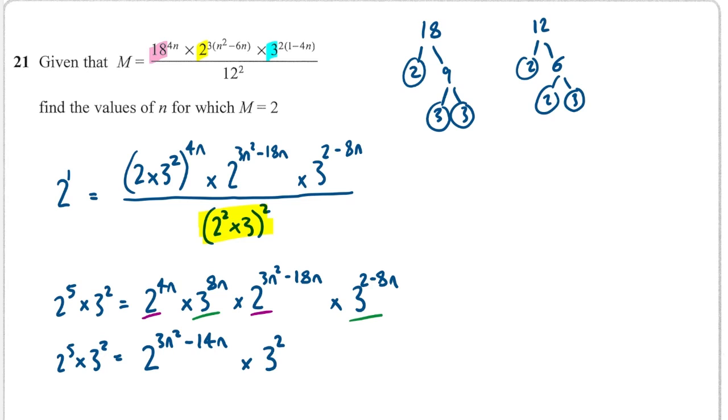Okay, great. Next thing I can do is I have 3 squared on both sides. So I can divide by 3 squared on both sides. And now I've got 2 to the something is equal to 2 to the something. Well, that means that these somethings must be the same.